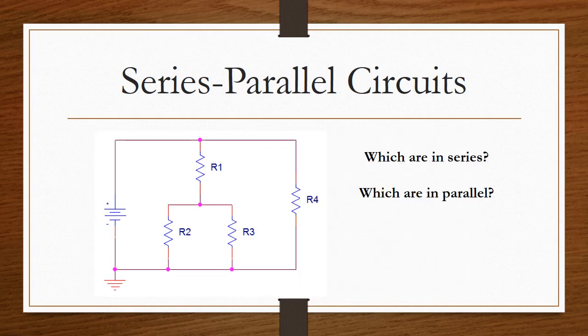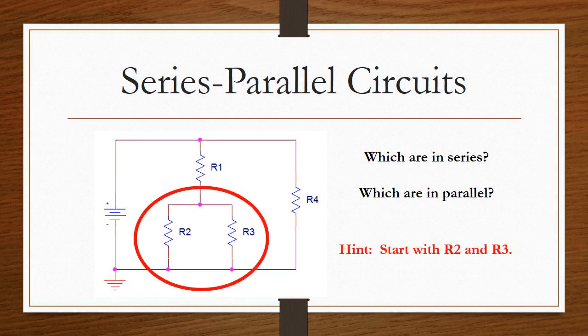In this resistor network, can you recognize which resistors are in series and which resistors are in parallel? I'll give you a hint. Start with R2 and R3.